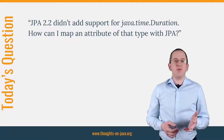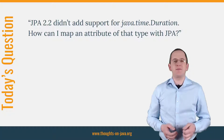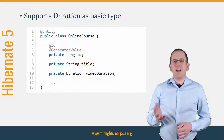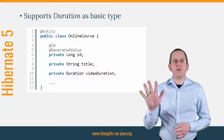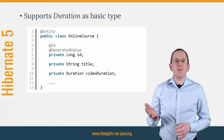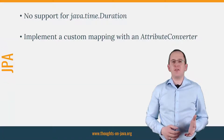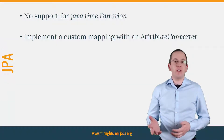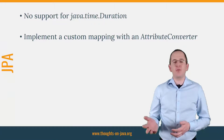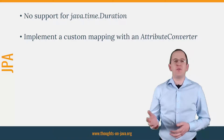But before we dive into any details, please don't forget to subscribe to get new videos every week. Hibernate supports Java Time Duration as a basic type since version 5. So, if you're allowed to use proprietary Hibernate features, you can use entity attributes of type Duration without any additional mapping annotations. But if you don't use Hibernate, or if some internal regulations prevent you from using proprietary features, you need to implement a custom mapping with a simple attribute converter.